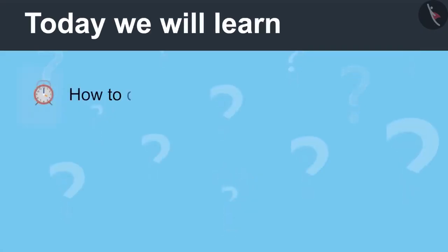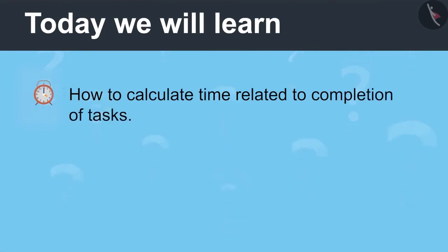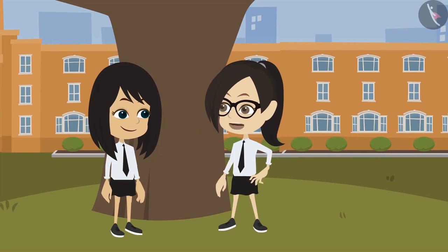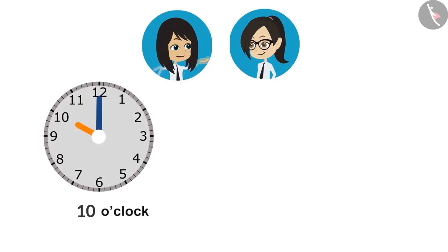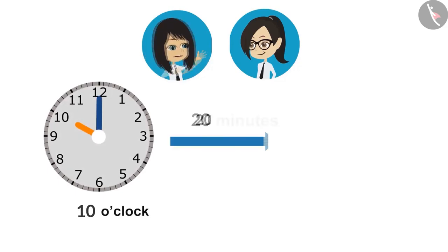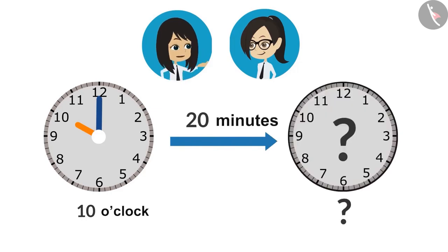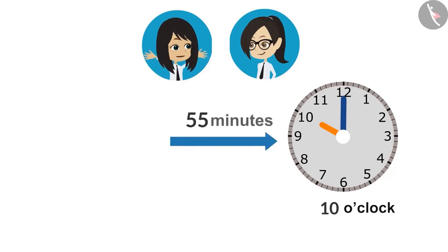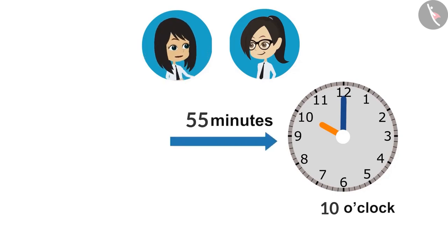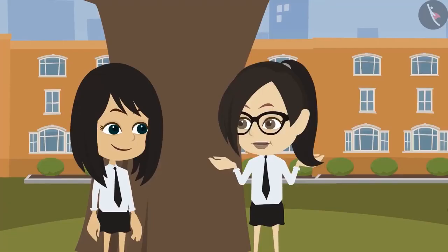Today we will learn how to calculate the time related to completion of tasks. Let us ask each other some questions related to what was learned last time. Last time we learned 3 things: first, if the start time of a task and how much time it will take are known, we can find the end time. Second, if the start time and end time are known, we can find how long it takes. Third, if the end time and how long it takes are known, we can find the start time. Let's ask questions related to these 3 points.